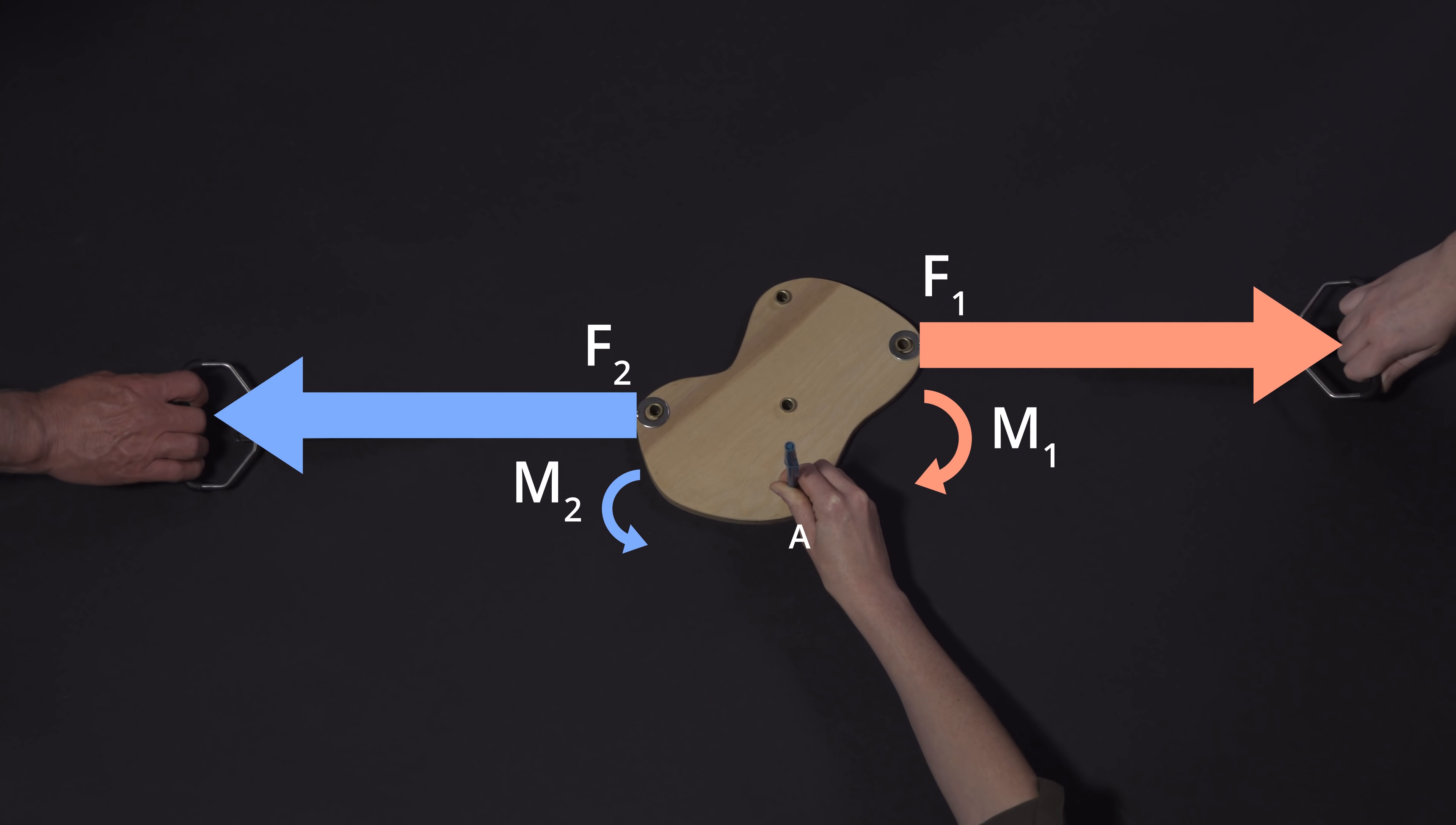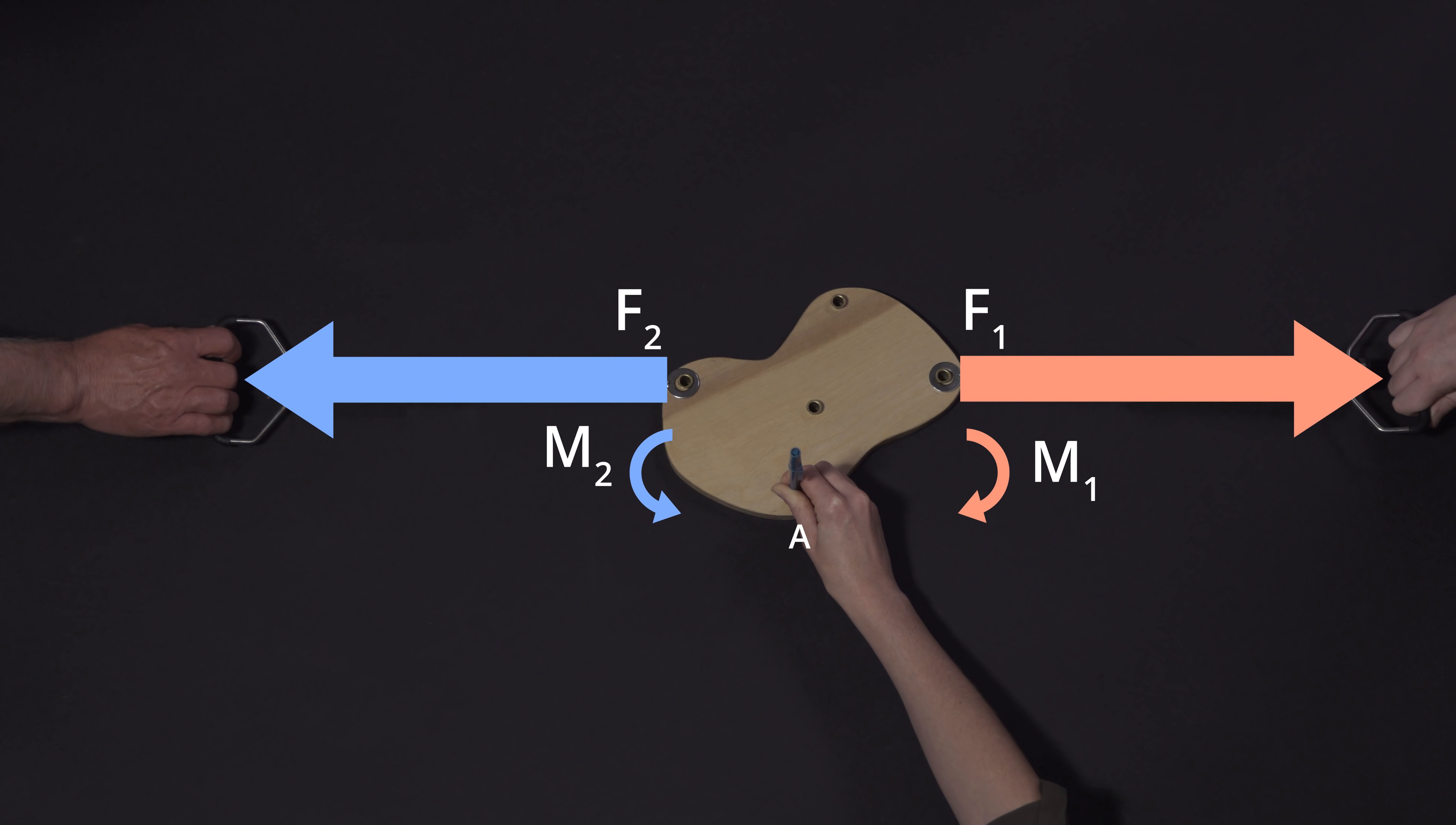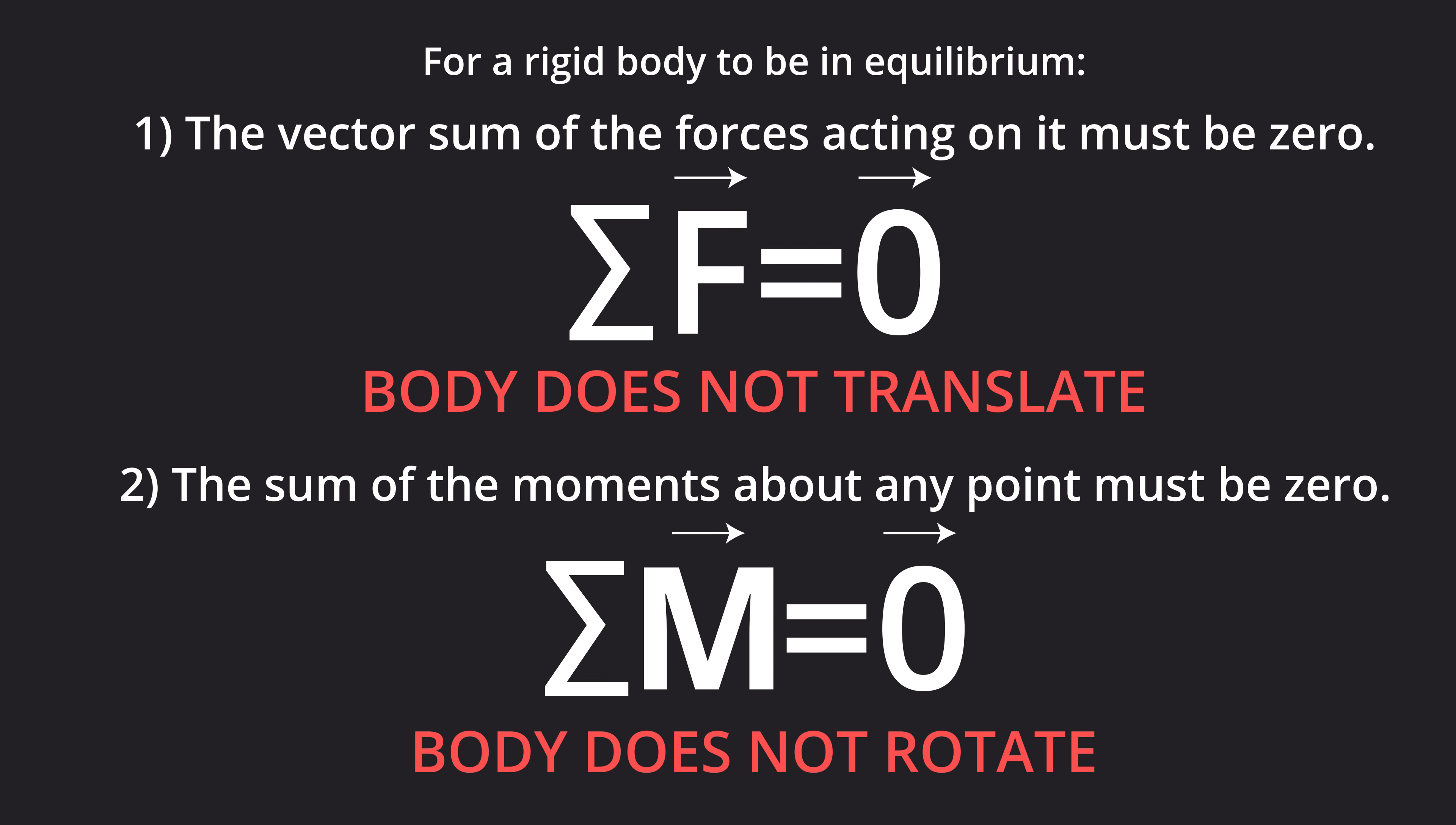As the body rotates, the moments generated by the two forces change, and when they just balance, the body stops rotating and comes into rotational equilibrium. We usually state the second condition as, the sum of the moments about any point must be zero.